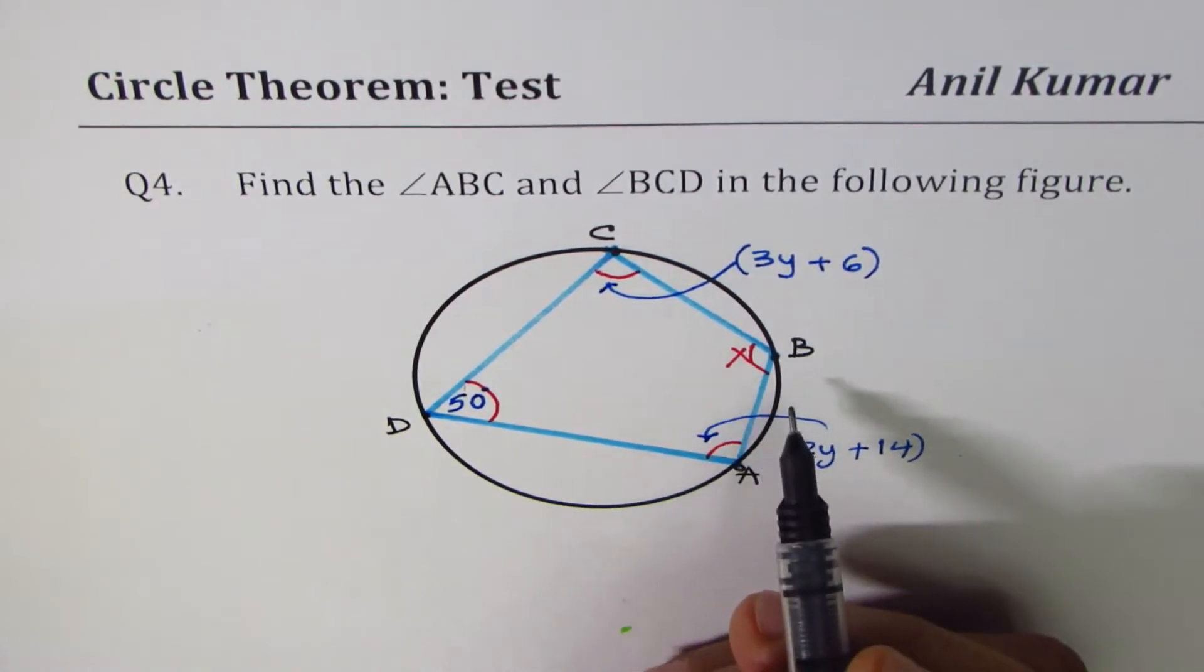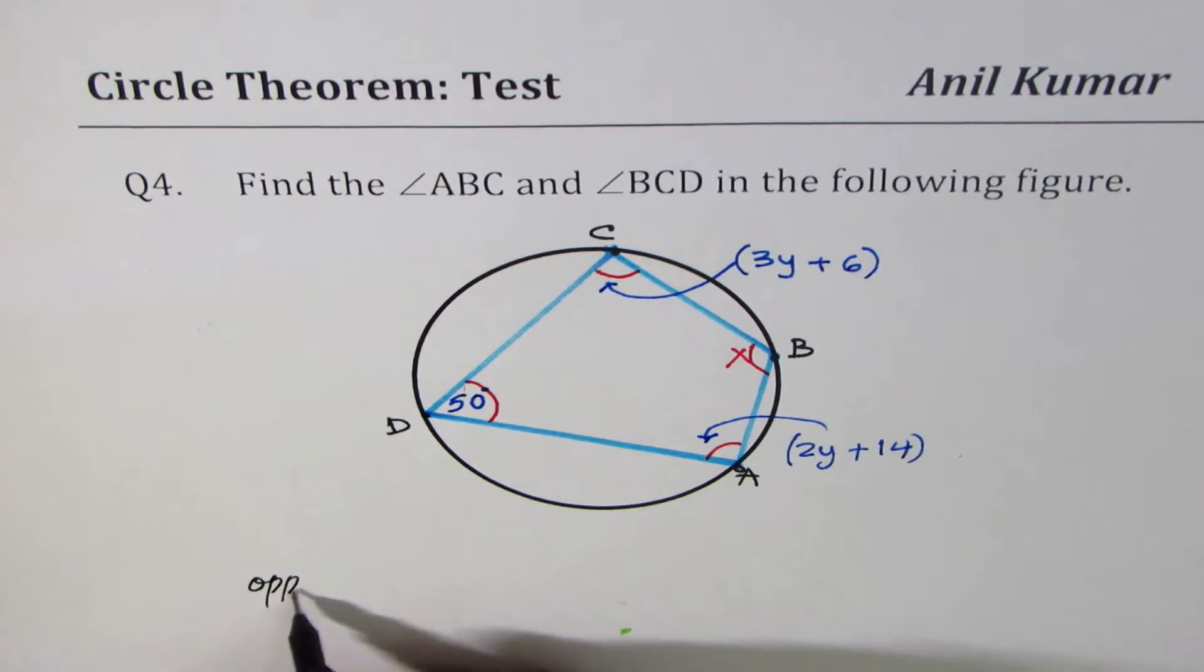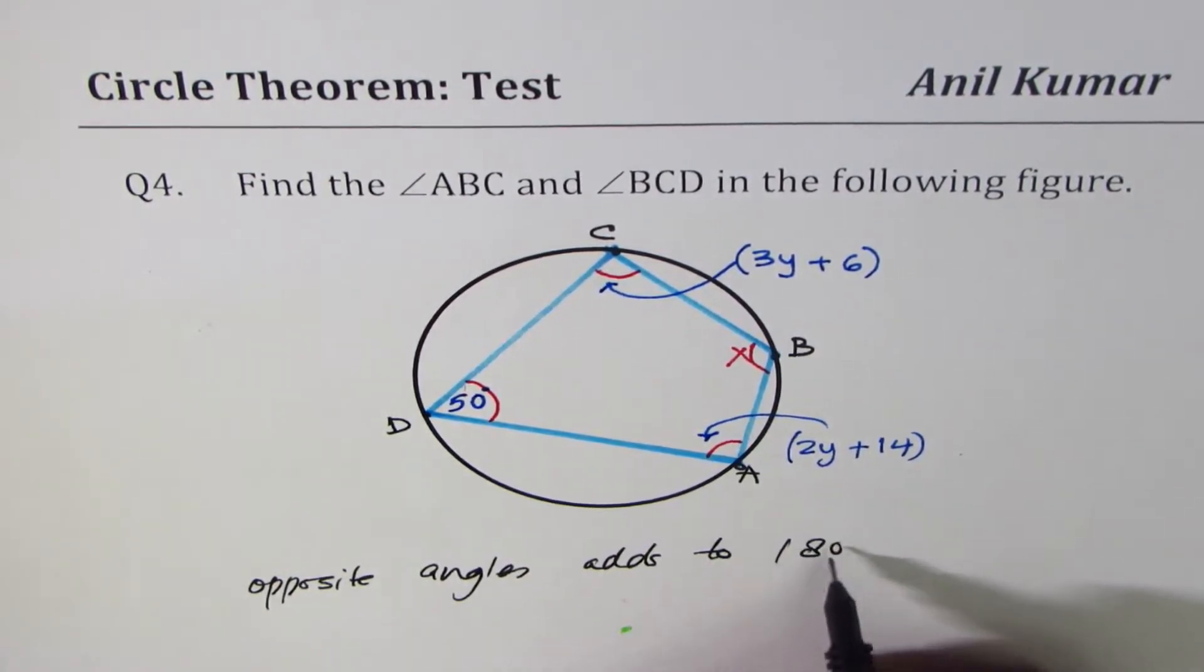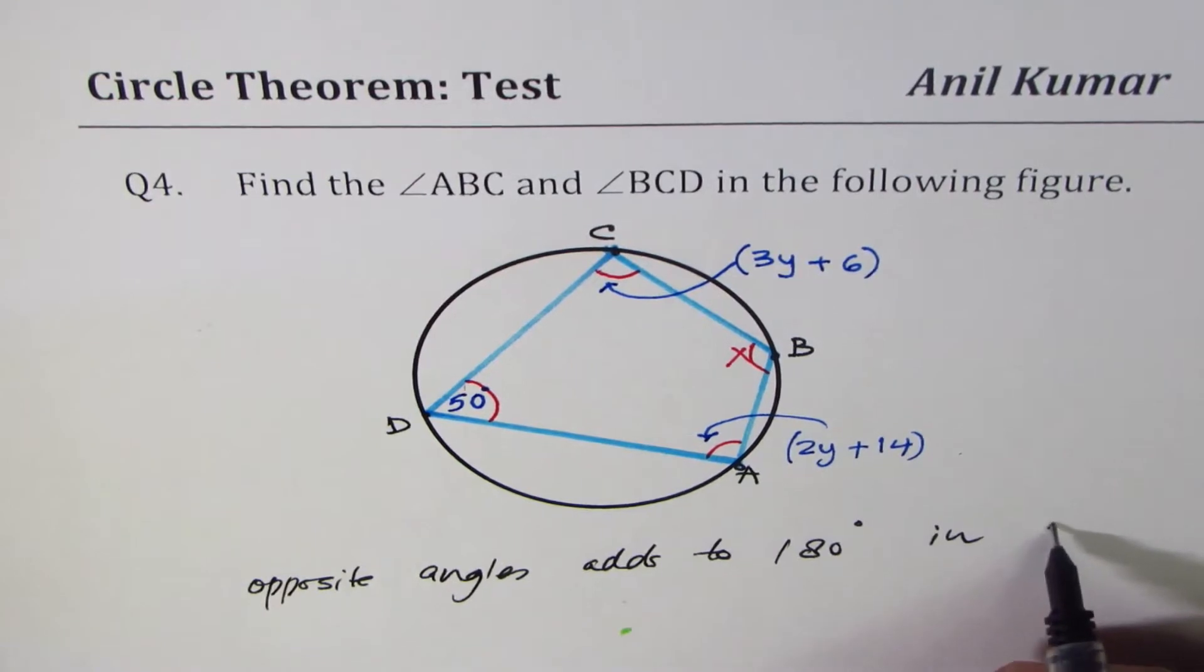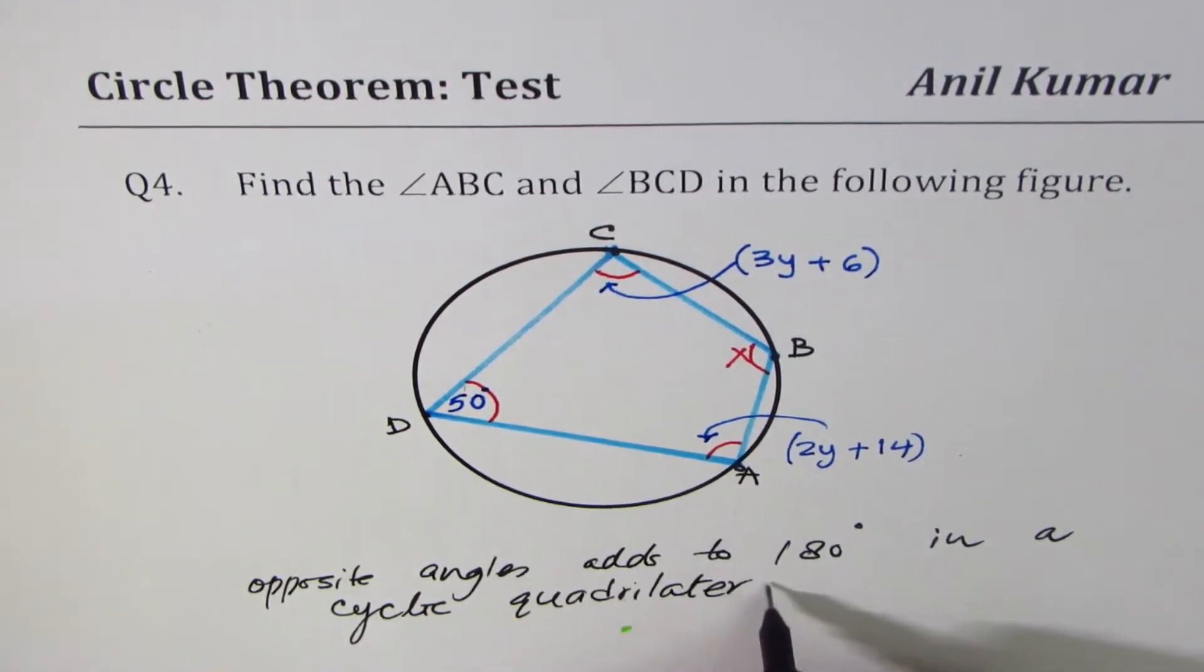We'll apply the rule that opposite angles add to 180 degrees in a cyclic quadrilateral. Perfect. That should give us the answer.